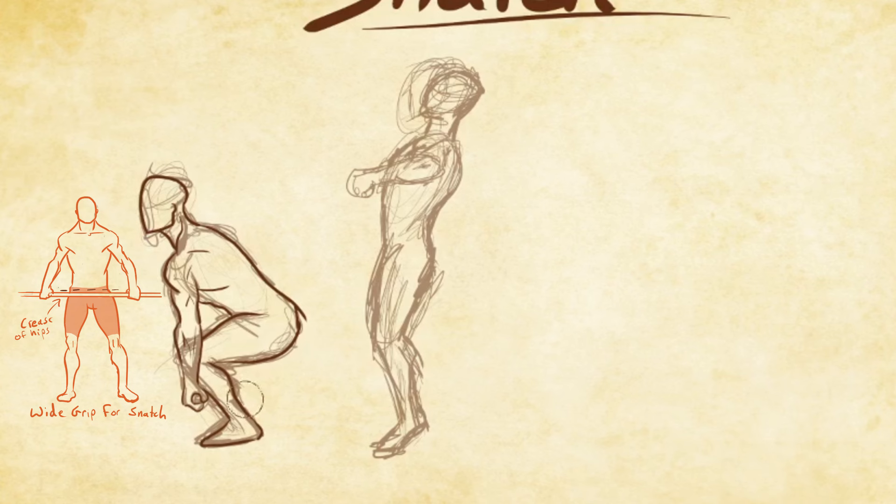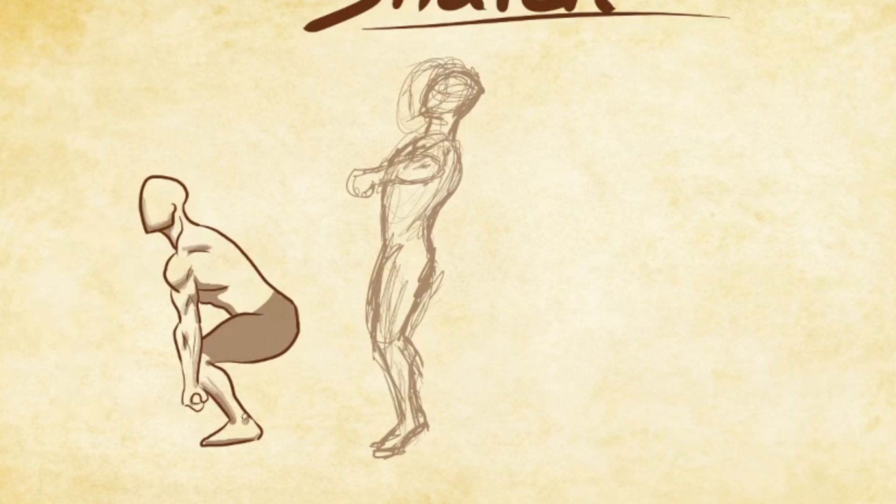To find your proper grip placement for the snatch, simply grab the bar with a width which places the bar right at the crease of your hips when you stand up with it. This deadlift phase of the lift brings the bar past the knees and again as the bar starts to near the crease of the hips...